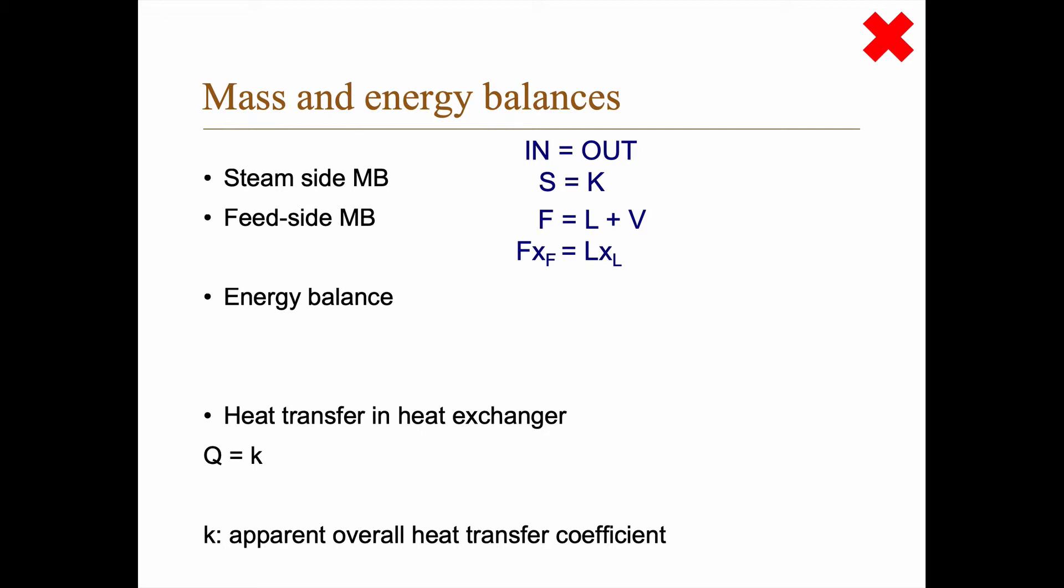And we need to multiply those with their respective enthalpies to get an enthalpy balance. So it looks like this: S times the enthalpy of that stream plus F times the enthalpy of that stream equals V times the enthalpy, and so on.